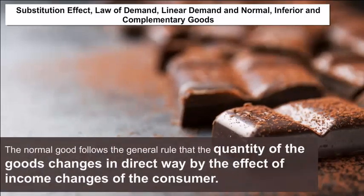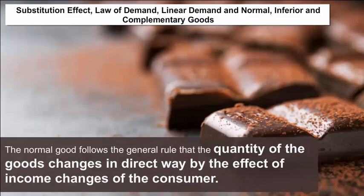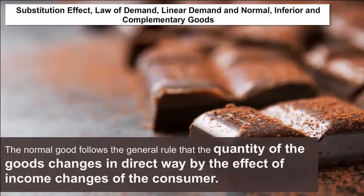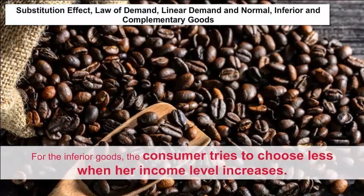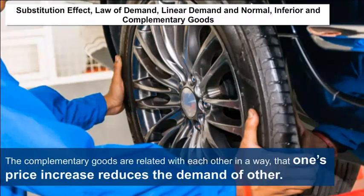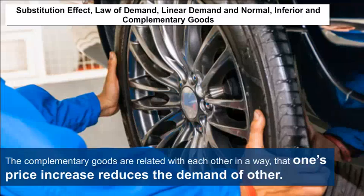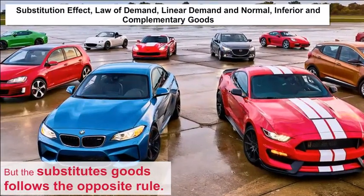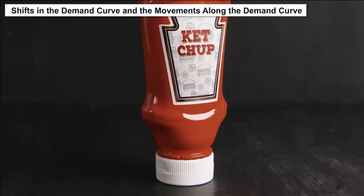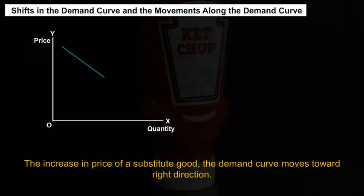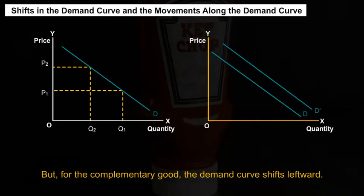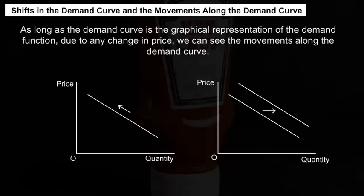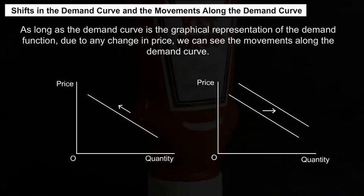A linear demand curve measures the rate at which demand changes per unit price change of the goods. For normal goods, the quantity of goods changes directly with income changes. For inferior goods, the consumer chooses less as her income level increases. Complementary goods are related such that a price increase in one reduces the demand for the other, while substitute goods follow the opposite rule. The demand curve shifts rightward with an increase in price of a substitute good, and leftward for a complementary good. Due to any change in price, we observe movements along the demand curve.